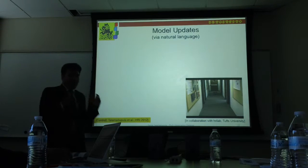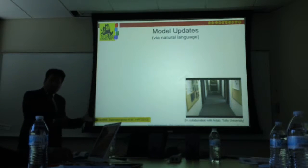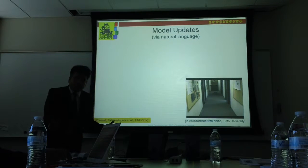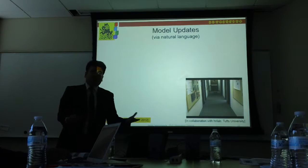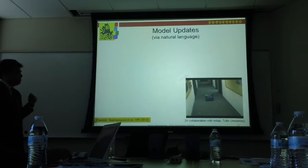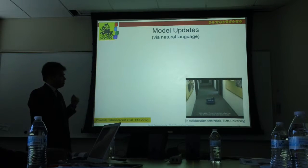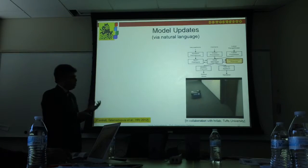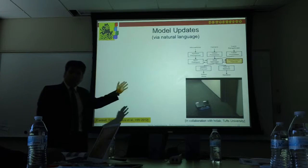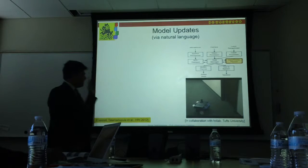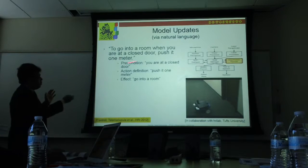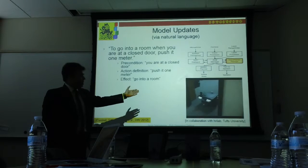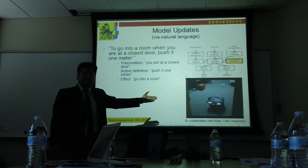That was the open-world quantified goals and replanning capabilities put together. Now I'll talk about the third capability: model updates. These model updates come via natural language, since it's natural to assume the human gives updates that way. Here's an example: 'To go into a room when you're at a closed door, push it one meter.' The human is telling the robot a new capability it didn't know before — that it can push doors.